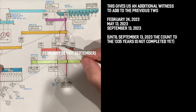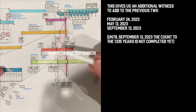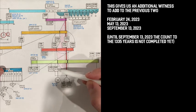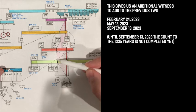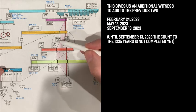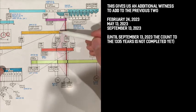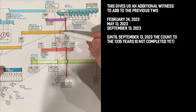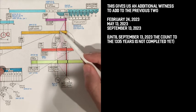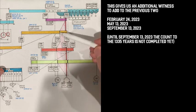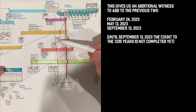So first witness, September 24th, with Arari's birthday. And then we have 5/13, May 13, with Israel's birthday. And then 9/13, with the 1335 years coming to a completion or a start of the 1335th year. So until September 13, the 1335 years haven't really passed. So now we have three witnesses starting September 13.